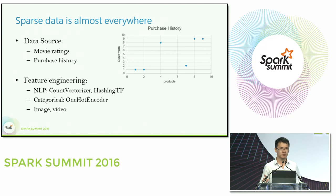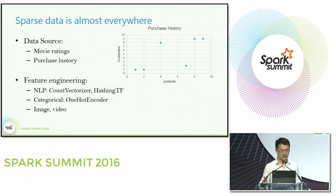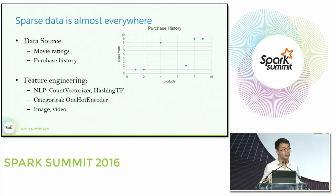Even if your original data is dense, you will probably convert it to sparse data during the feature engineering process. One example is during NLP processing: you may have to convert 140 words into a vector of dimension 1 million or 2 million, depending on the vocabulary size used. Another example is one-hot encoding for categorical values, which will also greatly increase the dimension and feature sparsity. It's also common practice in image and video preprocessing to fade out unrelated noise and keep only the essential part as a sparse data vector.